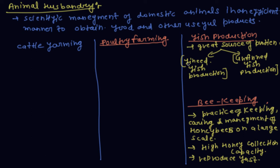Production of shellfish such as prawns or molluscs is called unfinned fish production.